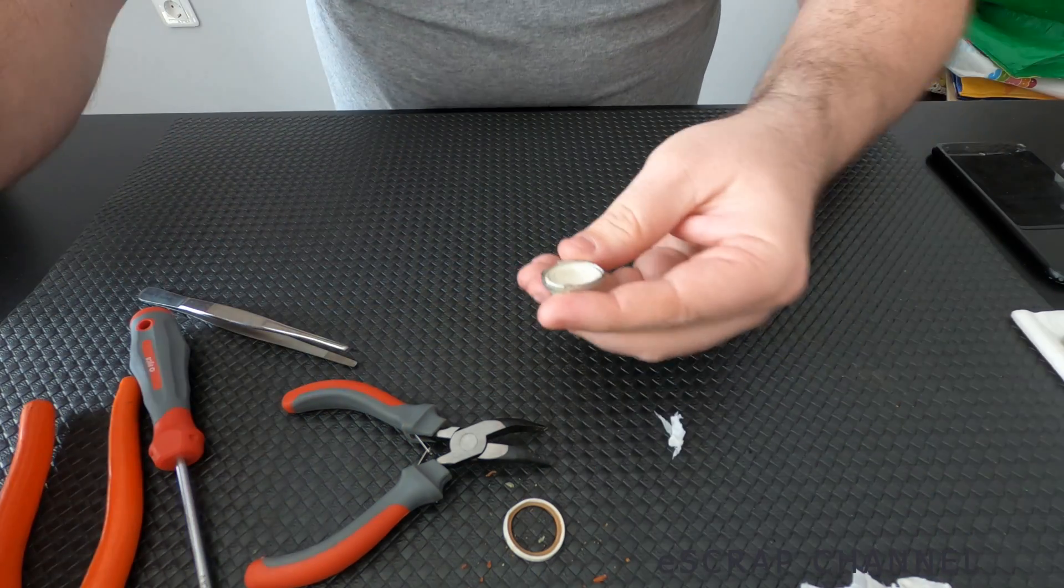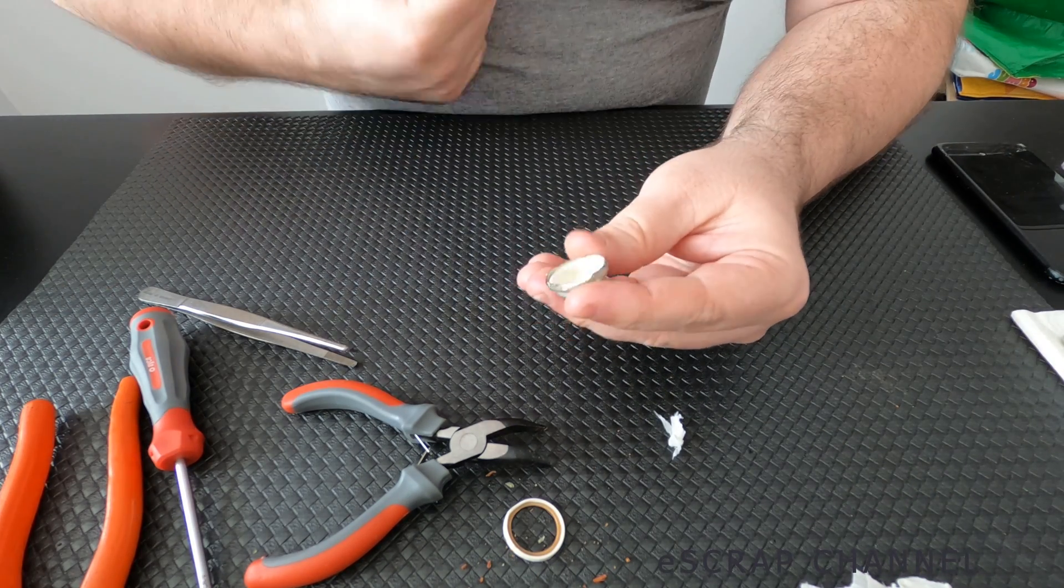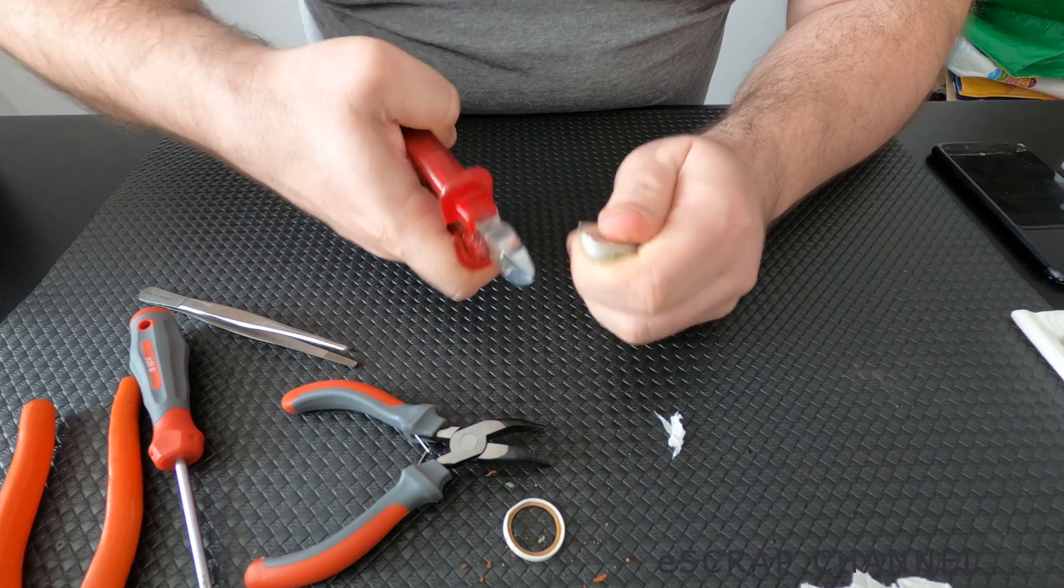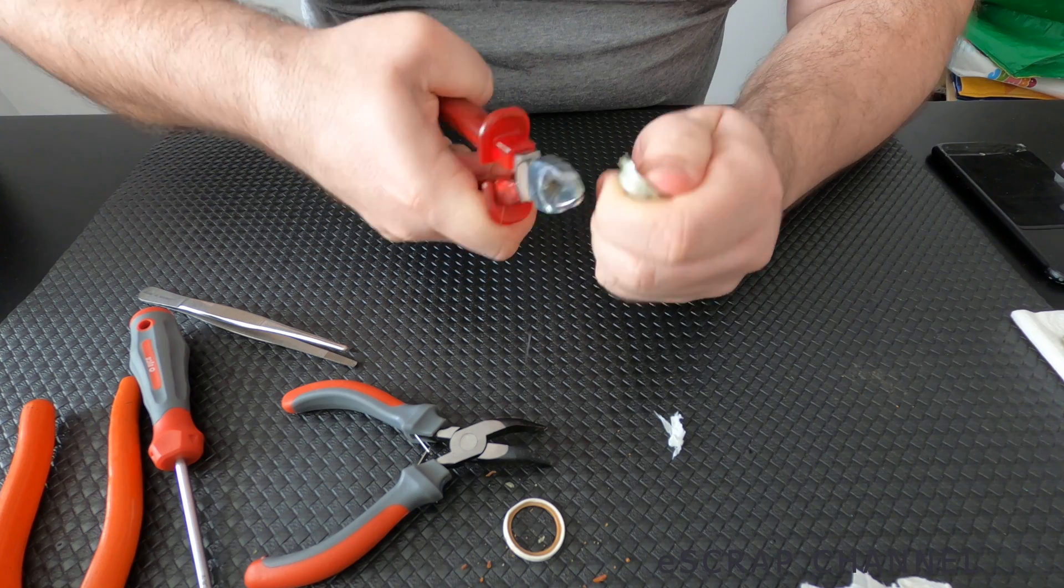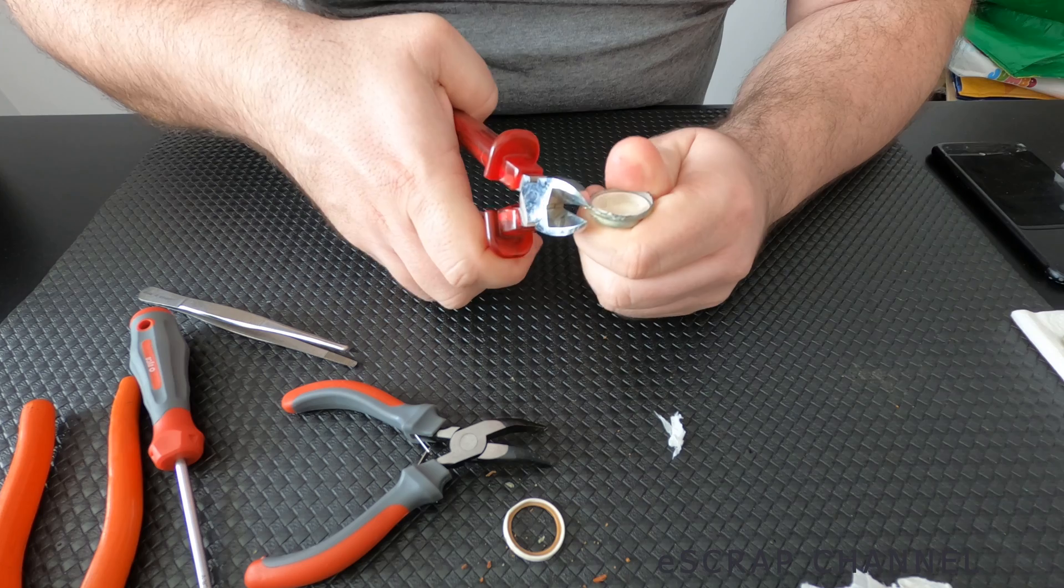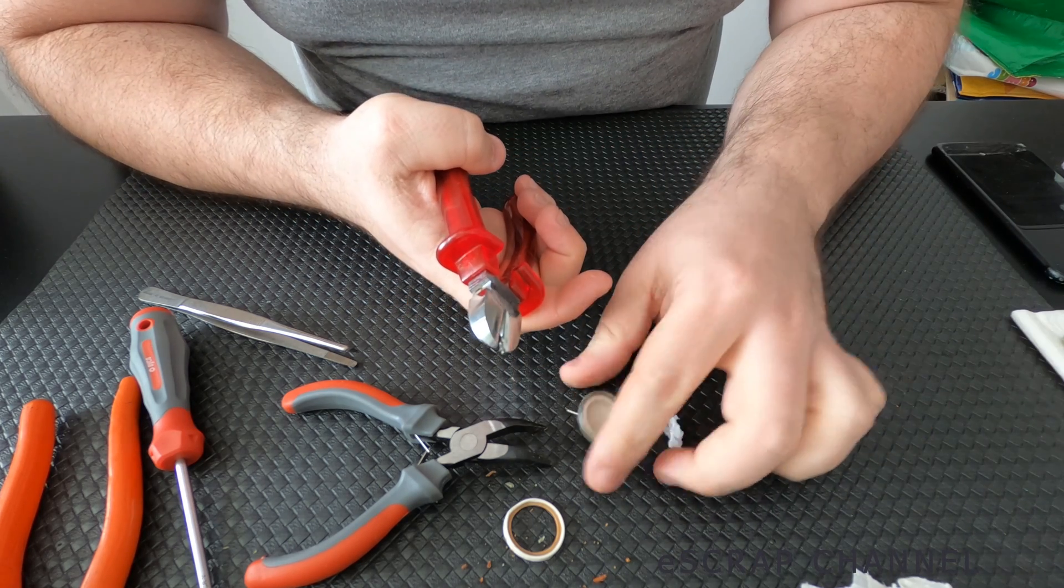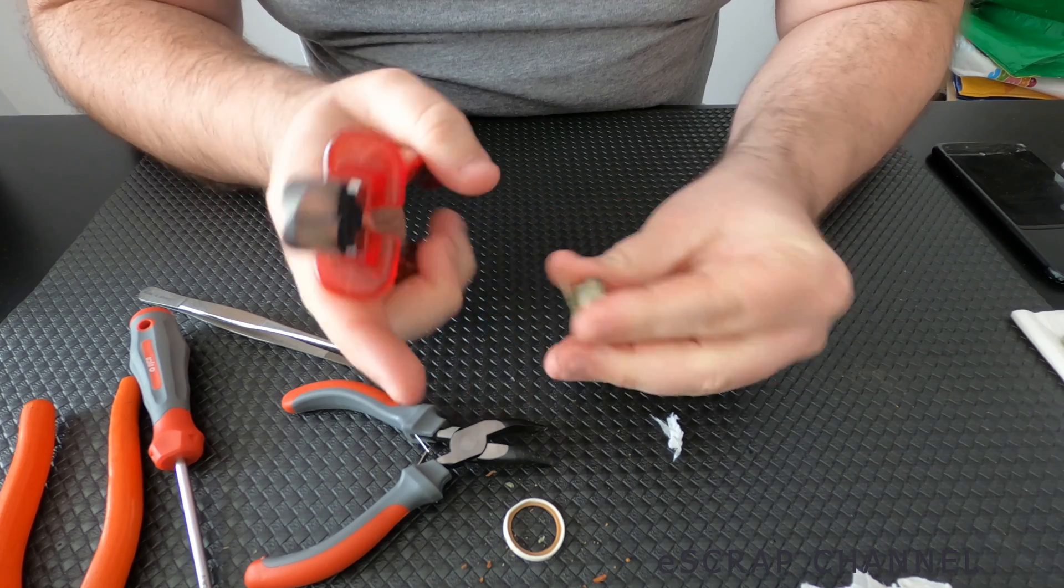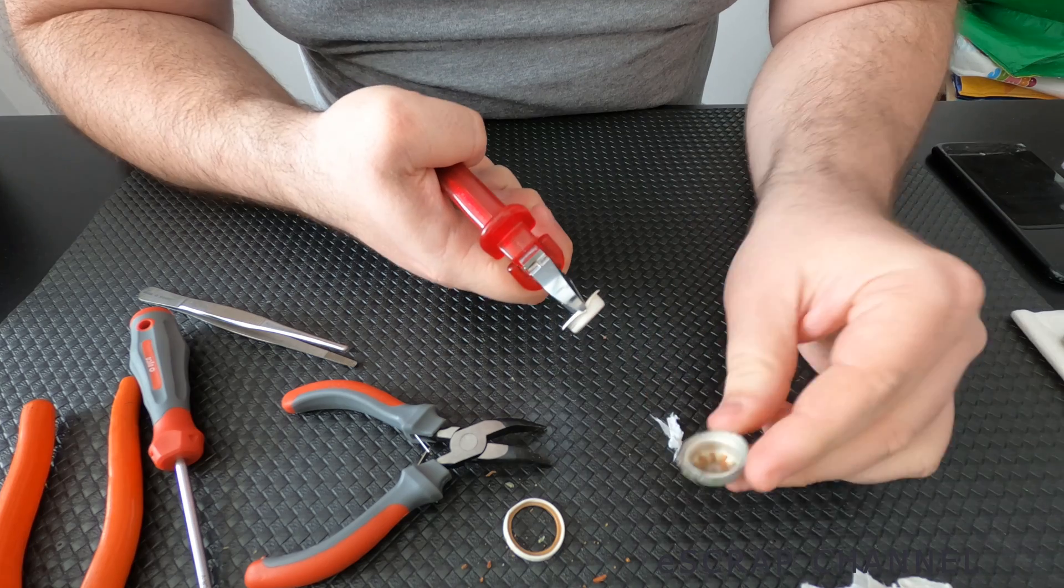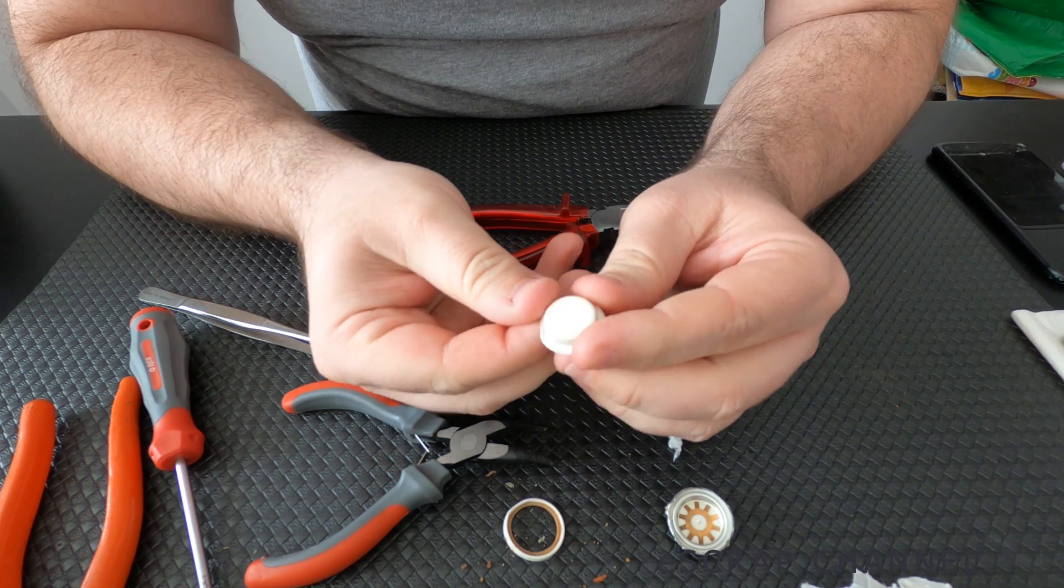And then this white stuff that you see inside is pure silver. Sometimes it's super easy to remove this. Sometimes it's not so easy. So let's see how this will go this time. I'll try from one side to cut it. No. No, it's not folding that easy. Oh, perfect.